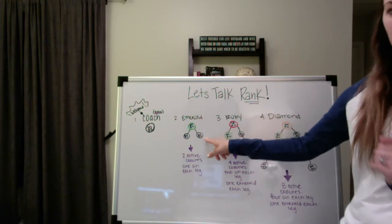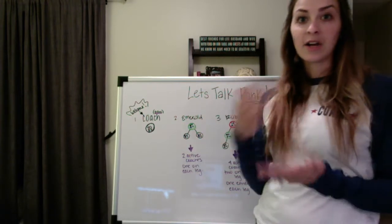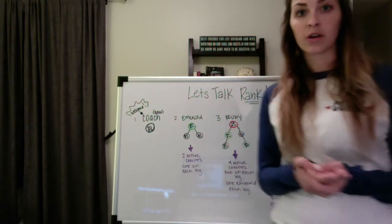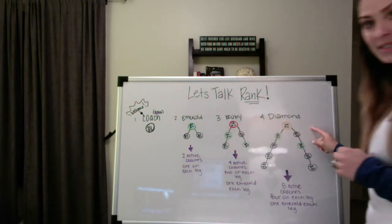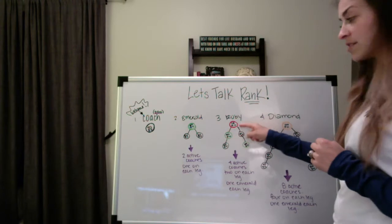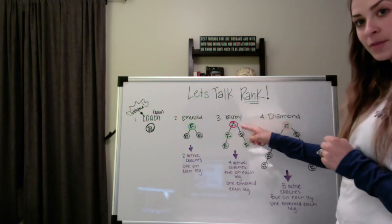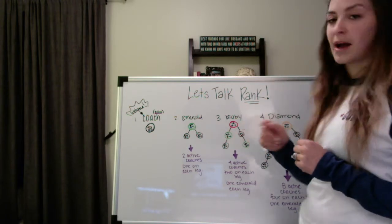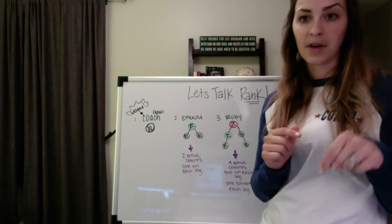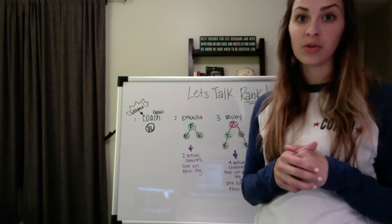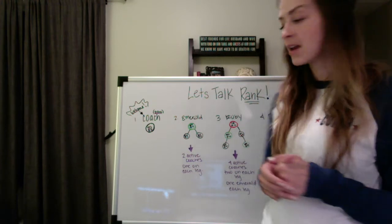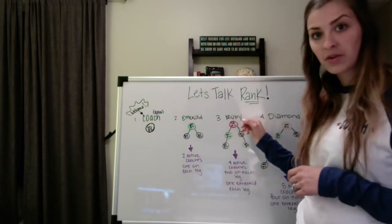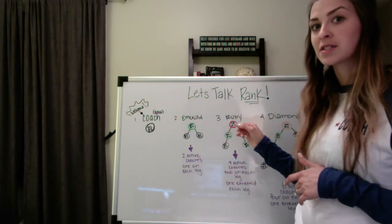Now, where it says 50 personal volume here, I know that I mentioned that that's from your personal orders. However, when you start getting into the Ruby and into the Diamond rank, part of this volume can be from your customer order. I would encourage you to look in the comments below and I'm going to include an FAQ with a little bit more information on that. But part of that personal volume can be from your customer.